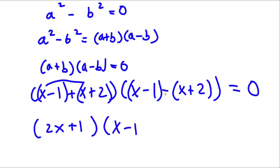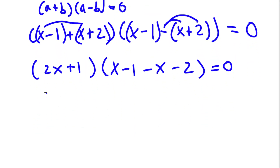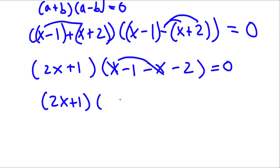Now I have x minus 1, and I have to distribute the negative sign. So I have minus x minus 2 is equal to zero. This gives me 2x plus 1 times x minus x — these two cancel out — so I'm left with negative 1 minus 2, which is negative 3, is equal to zero.